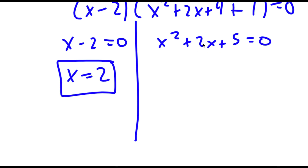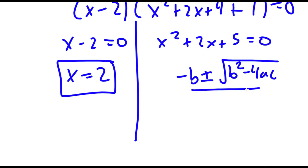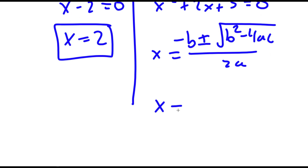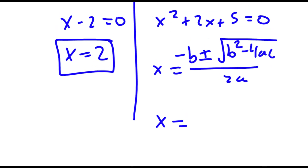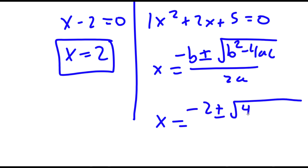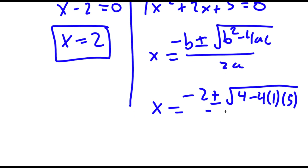And for x squared plus 2x plus 5 equals 0, I can use the quadratic formula, which is negative b plus or minus the square root of b squared minus 4ac all over 2a. So in this case, a is 1, b is 2, and c is 5. So I have negative 2 plus or minus the square root of 2 squared, which is 4, minus 4 times 1 times 5, all over 2 times 1.